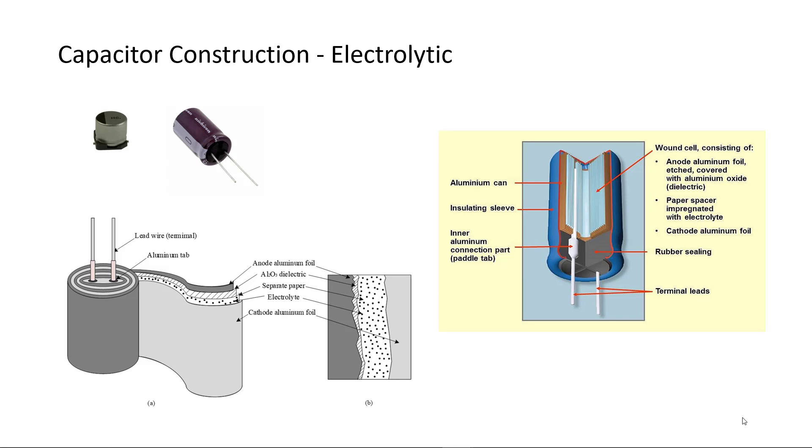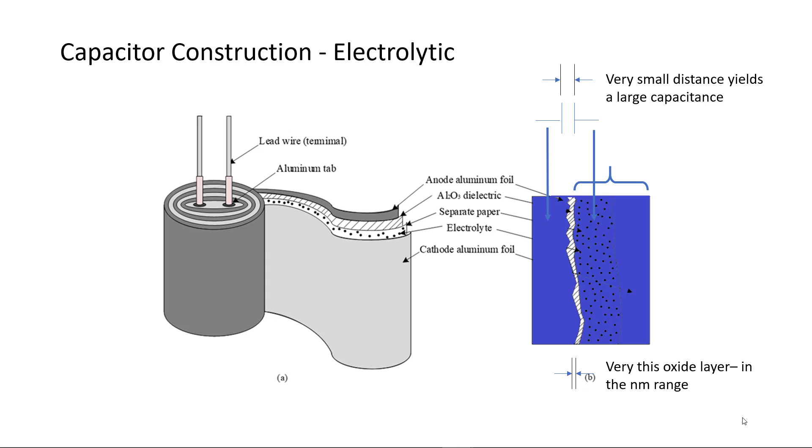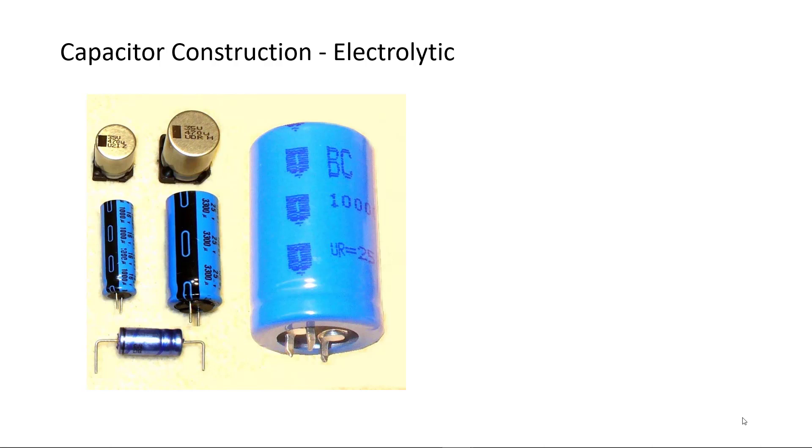Electrolytic capacitors use paper impregnated with an electrolyte. A DC current is applied to create a very thin oxide layer. Because the paper soaked in electrolyte is conductive and connects to the other aluminum sheet, a very small distance between conductors is realized. This results in high values of capacitance in a small volume. Electrolytic capacitors are polarized and have an anode which must be connected to positive and a cathode which must be connected to a more negative voltage. The cathode symbol is usually identified with a minus sign.